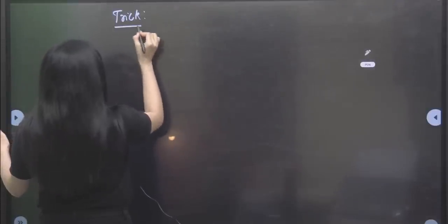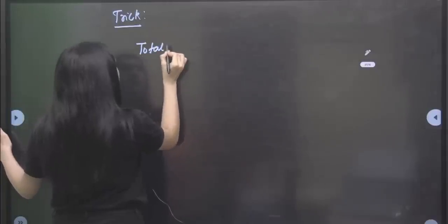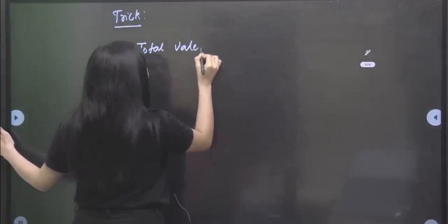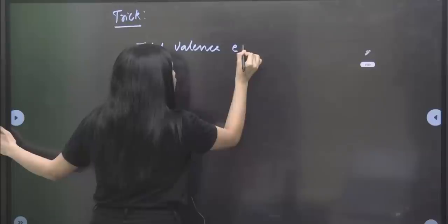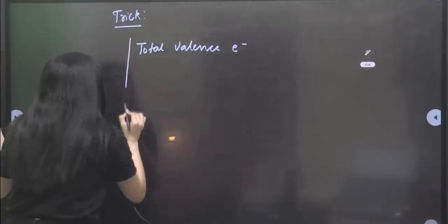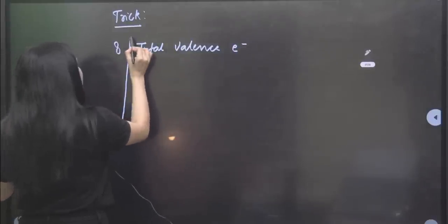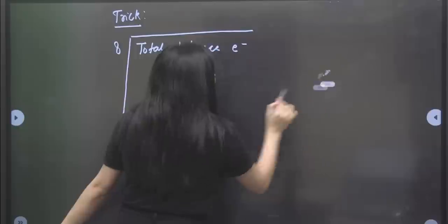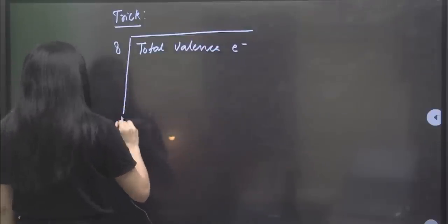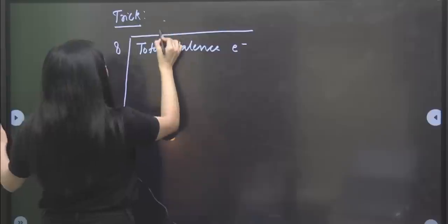What do we want to do? Whatever molecule we have given, we will find out the total valence electrons. Once you have total valence electrons, divide it by 8. When you divide it by 8, you will have a value of quotient.